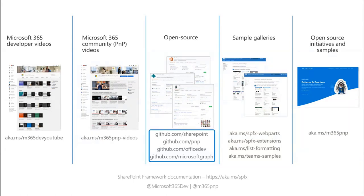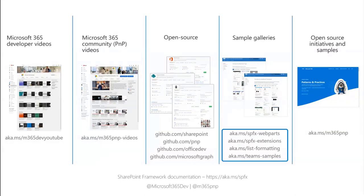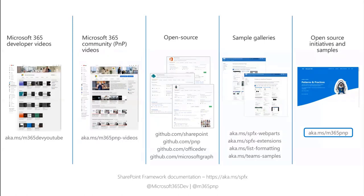On the open source side, there are multiple organizations where you can find content, samples, guidance, and tools, and you can contribute to all of them. We have four different sample galleries for Microsoft Teams, SPFx, list formatting — which is one of the most popular — and more. We're looking at potentially having one unified Microsoft 365 sample gallery later this year. And if the number of URLs feels overwhelming, there's only one URL to remember: aka.ms/M365PnP, which is Microsoft 365 Patterns and Practices.